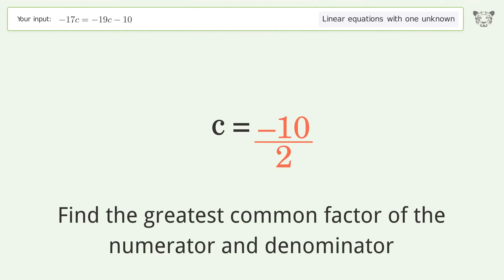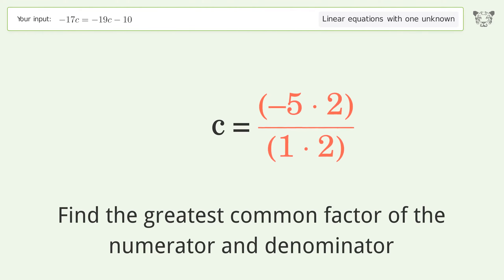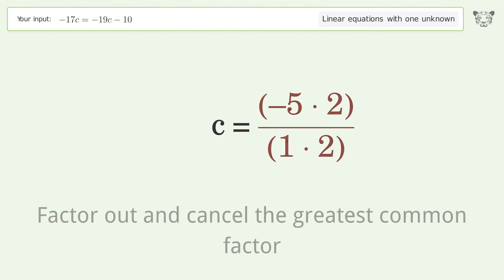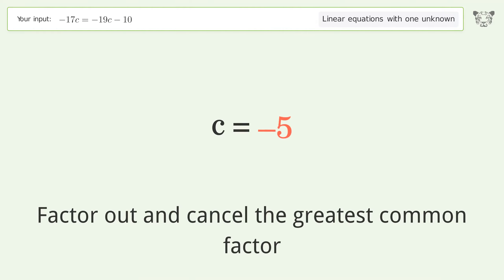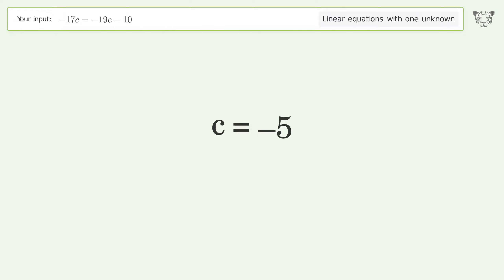Find the greatest common factor of the numerator and denominator. Factor out and cancel the greatest common factor. And so the final result is c equals negative 5.